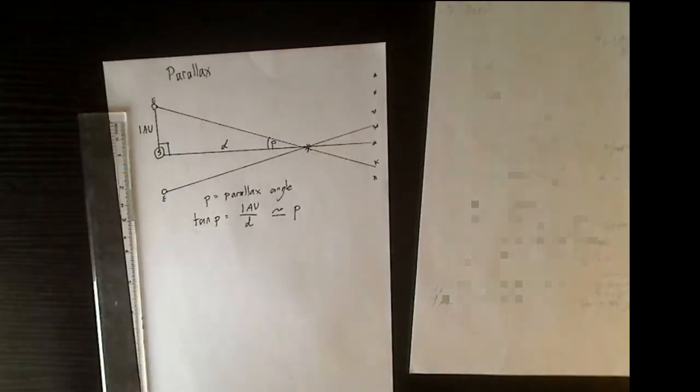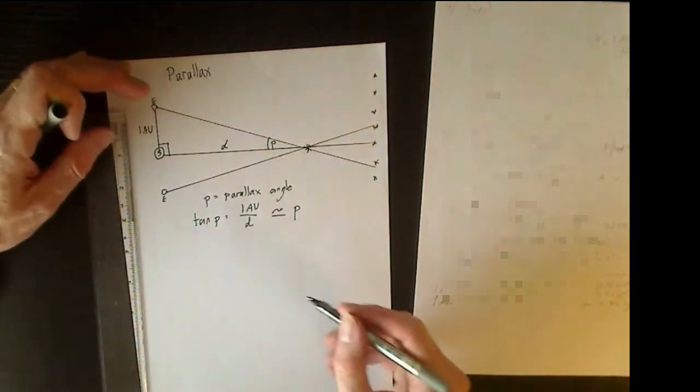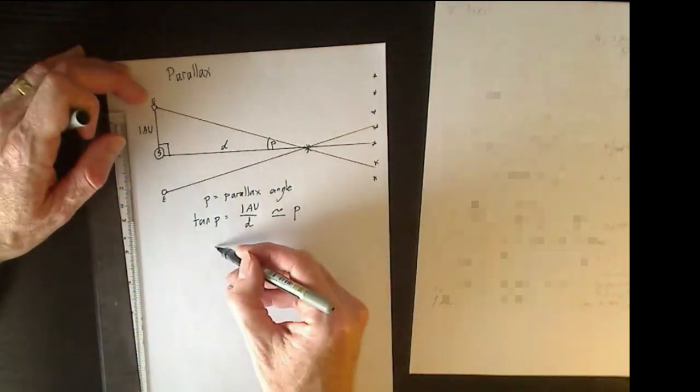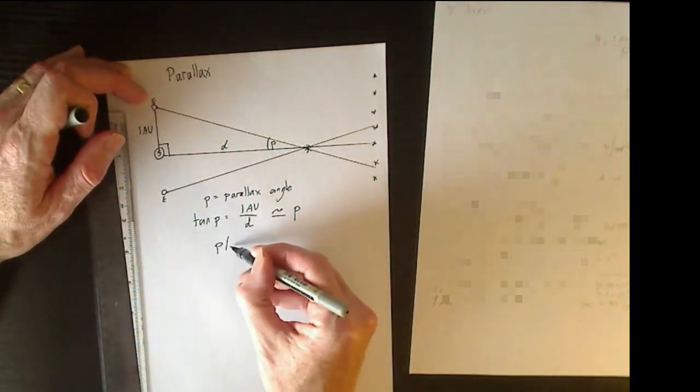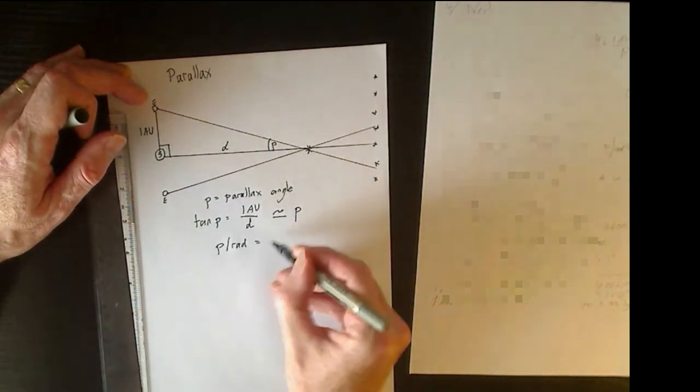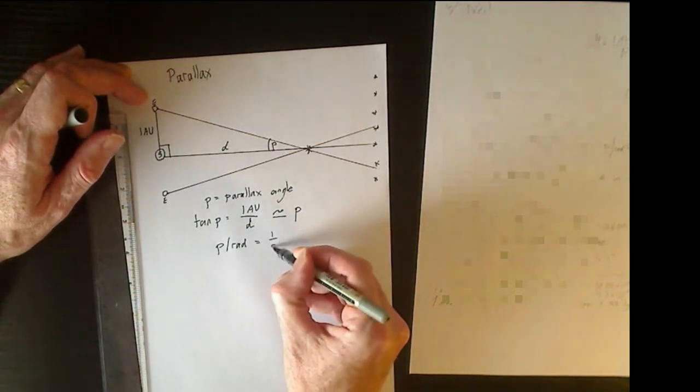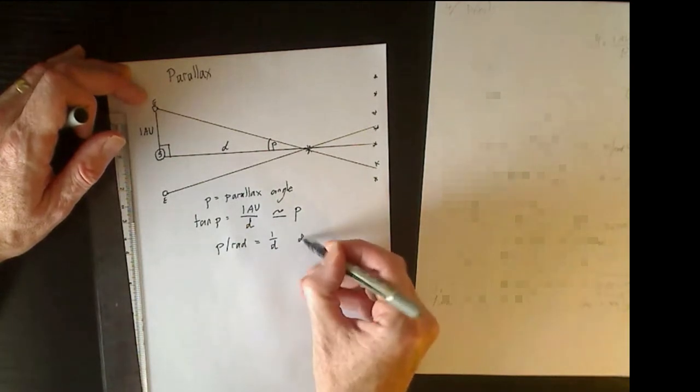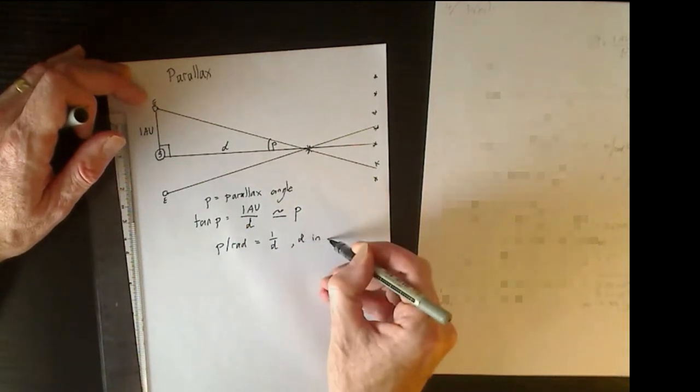Tan P equals P for very small angles, provided you're using radians. So we could then write that P in radians is equal to 1 divided by the distance, where the distance is in astronomical units.